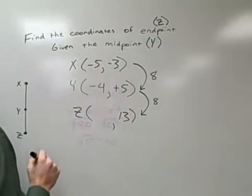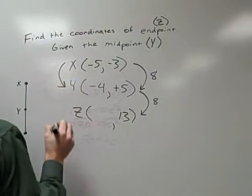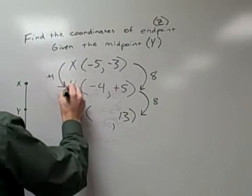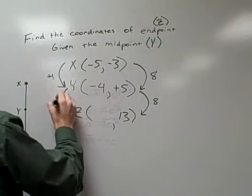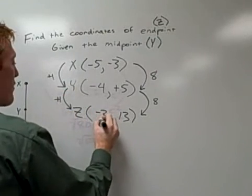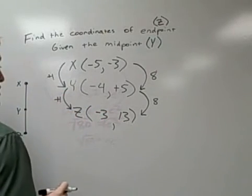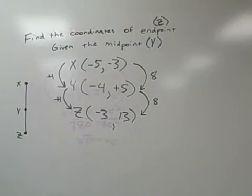I need to do that over here on the left side. The x-coordinate distance from negative 5 to negative 4 is a positive 1. I just need to do that one more time and I will get negative 3. So our endpoint Z is at negative 3 and 13.